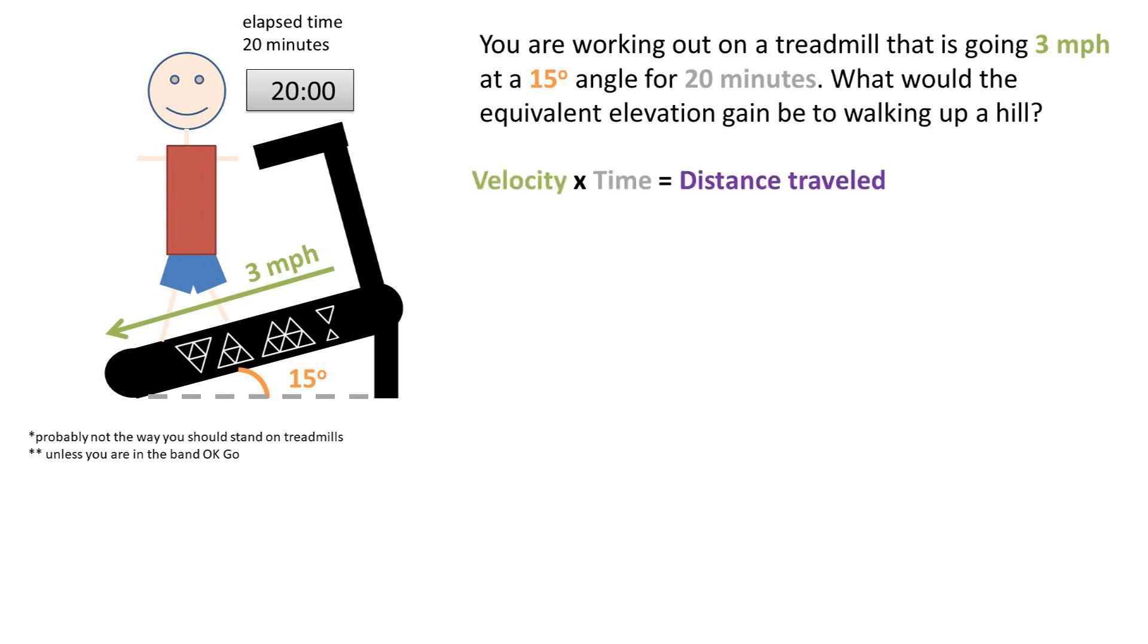Recall that velocity times time is the distance traveled, assuming zero acceleration and zero starting position. Technically, because they're on a treadmill, their velocity would be 0 miles per hour. But because we're doing the equivalent of going up a hill, we'll be using the velocity of 3 miles per hour.